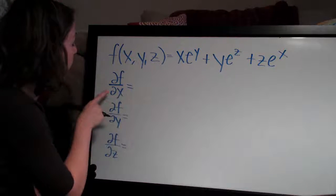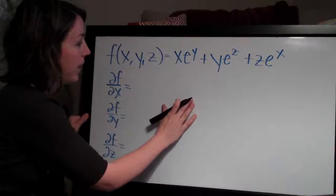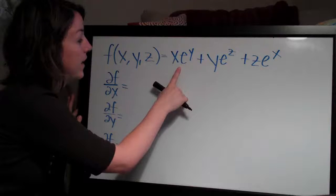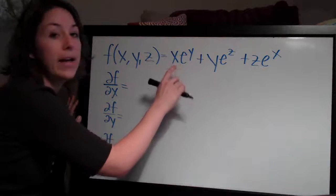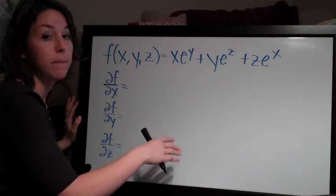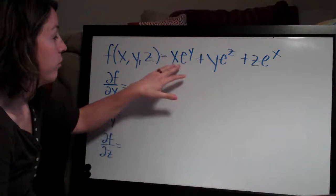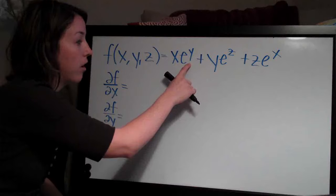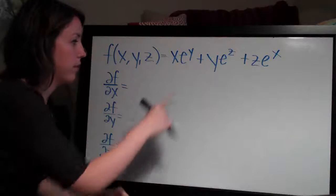We're going to start with the partial derivative with respect to x. When we're looking at this equation and taking the derivative with respect to x, all that means is that we're going to hold y and z — the other two variables — constant. So let's go term by term. For x e to the y, if we're holding y as a constant, then e to the y will also be a constant.